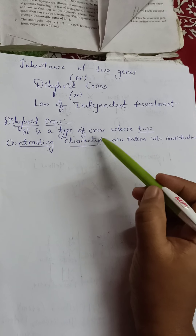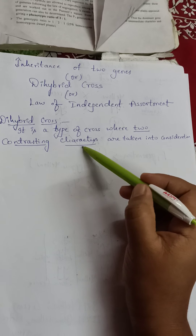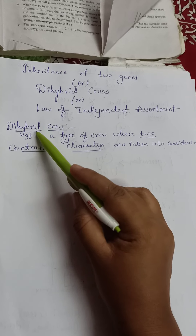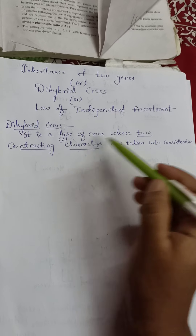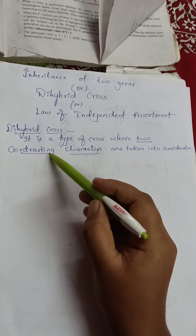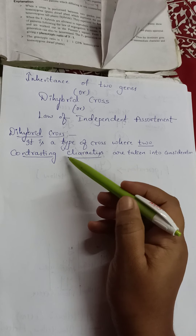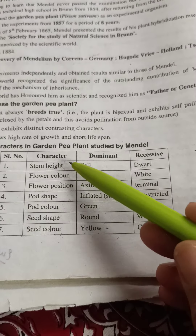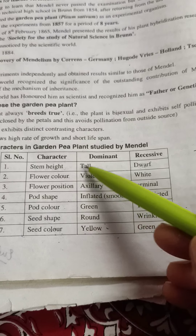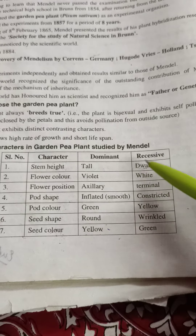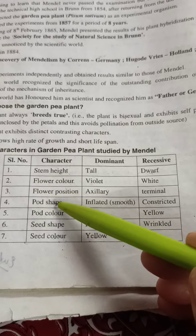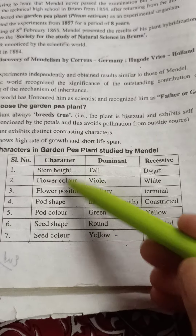In monohybrid cross, only one contrasting character was taken into consideration, hence it was called monohybrid — mono means one. Here in dihybrid cross, di means two, so we have to do the crossing by taking two contrasting characters. You can see seven pairs of contrasting characters. If we take any one of them we can perform monohybrid cross, but for dihybrid cross we have to take any two of these seven characteristic features.